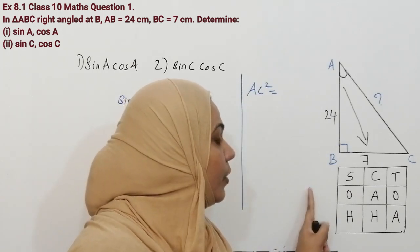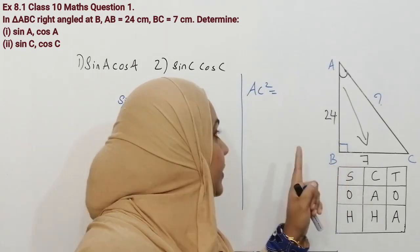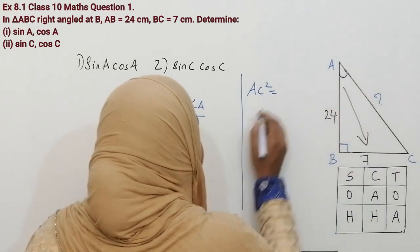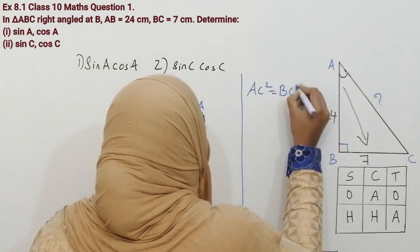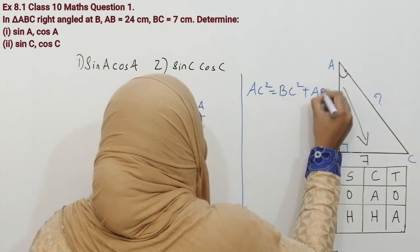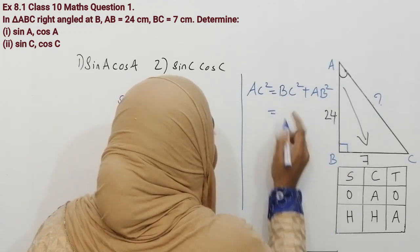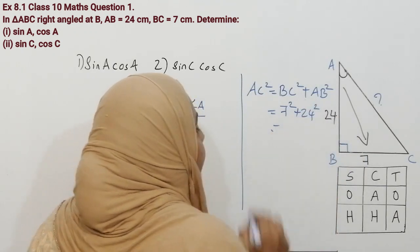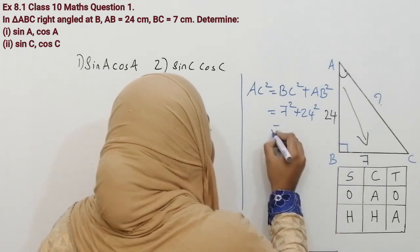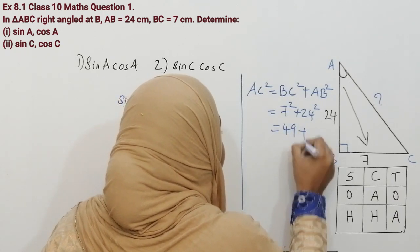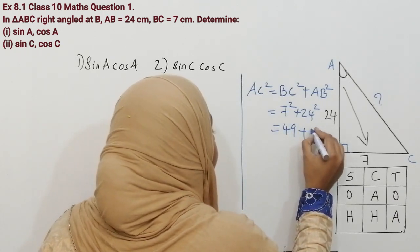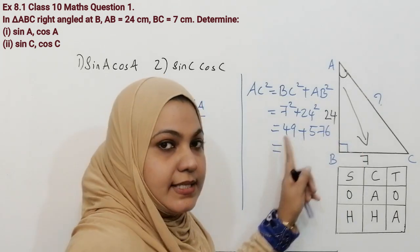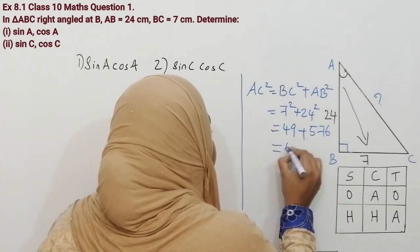Hypotenuse squared equals base squared plus height squared. So AC squared equals BC squared plus AB squared. BC is 7, so 7 squared is 49; AB is 24, so 24 squared is 576. 49 plus 576 is 625.